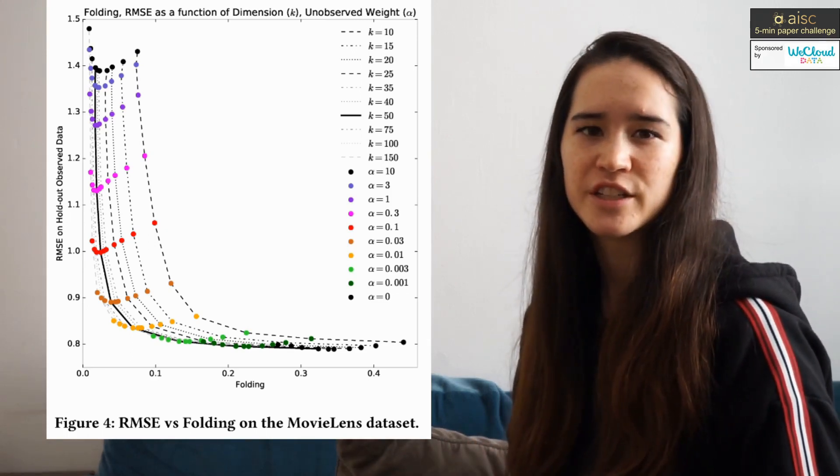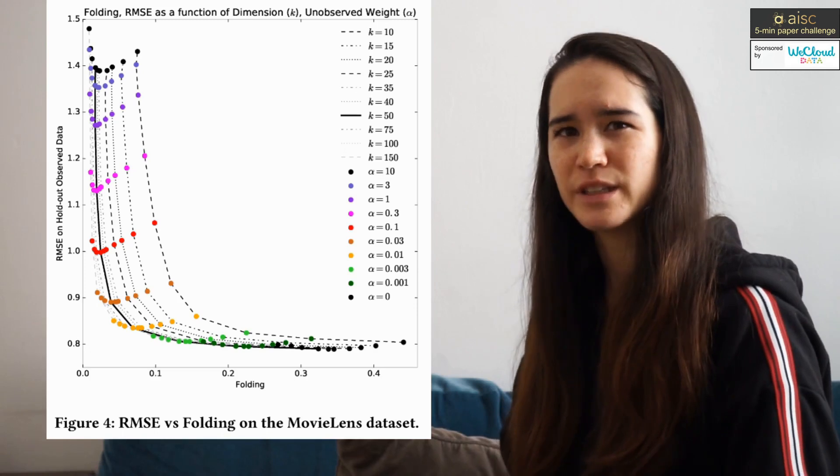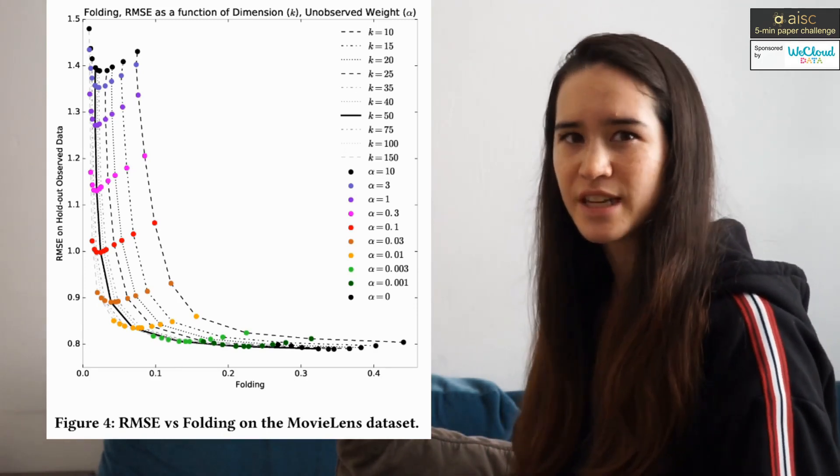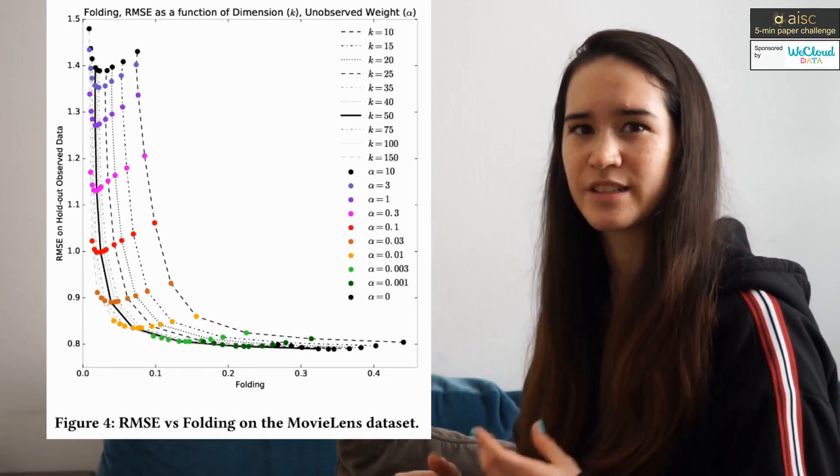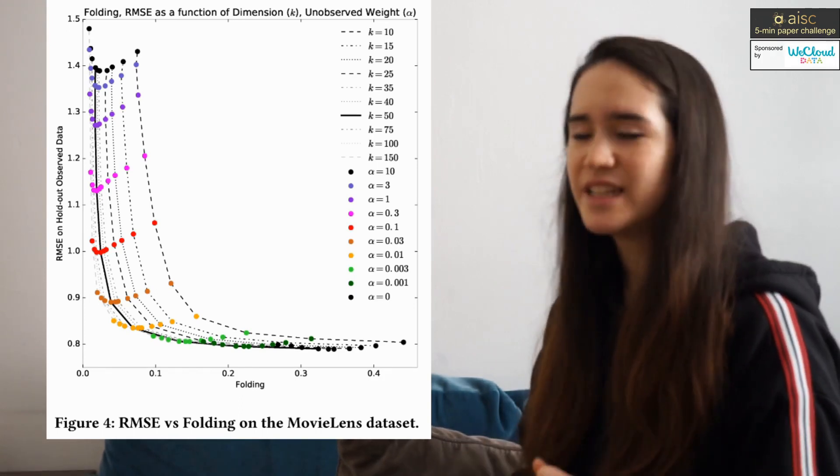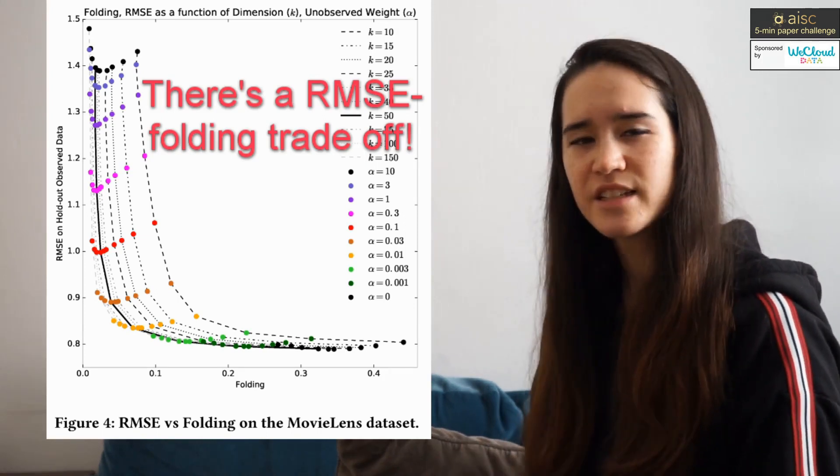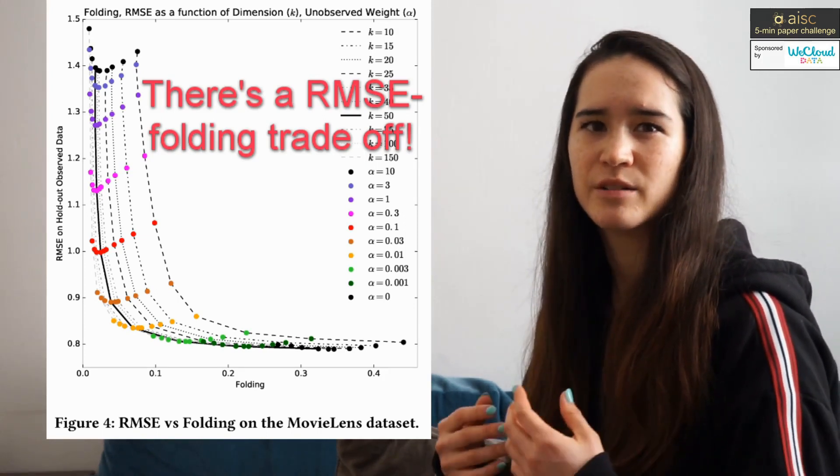So they find that there's a negative correlation between root mean squared error and folding. So the best root mean squared error is obtained for low alpha, which essentially means missing data is largely ignored. But these good root mean squared error values were associated with high folding. This suggests that the best root mean squared error models have a high propensity to make spurious recommendations.